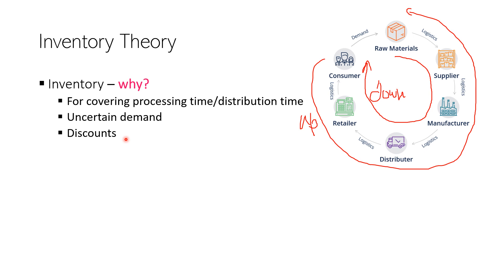Another reason for stocking up inventory is discounts. A player in the supply chain may announce a discount on a particular product. For example, if a distributor announces a discount and the retailer finds they can get a product at 10 percent off the price, and the retailer knows the price will increase after a certain period, the retailer may consider stocking up inventory of that product. This is one of several reasons why inventories exist in the supply chain.